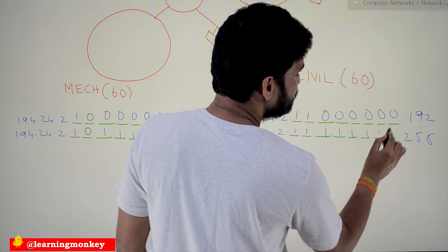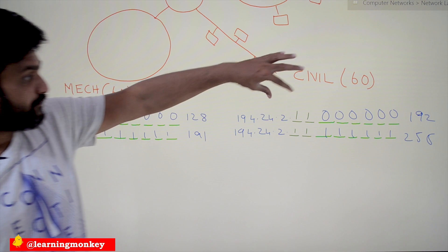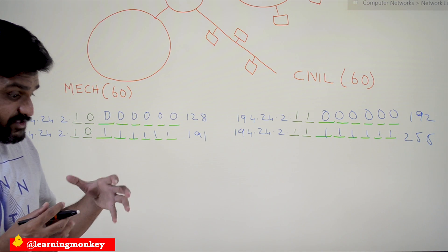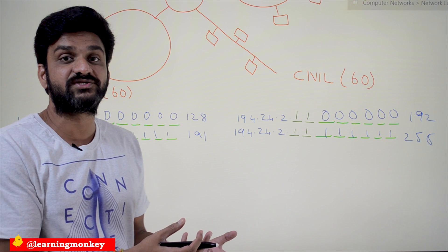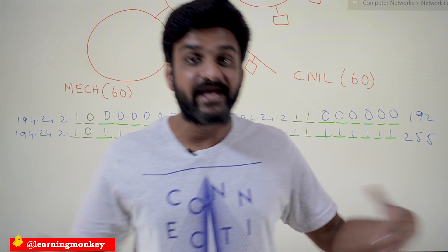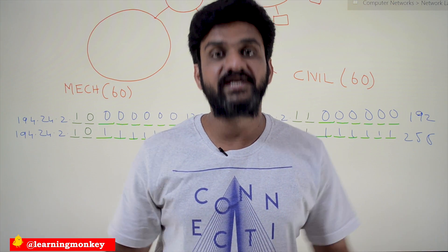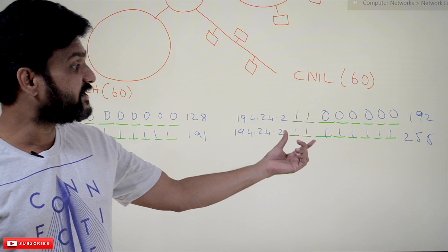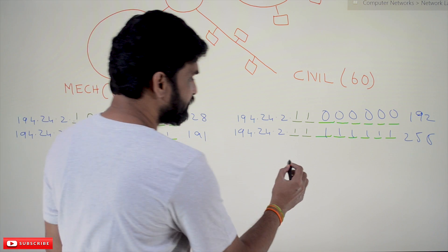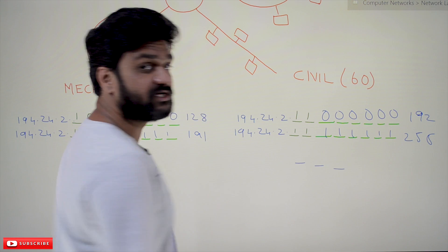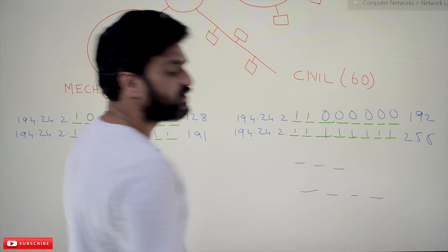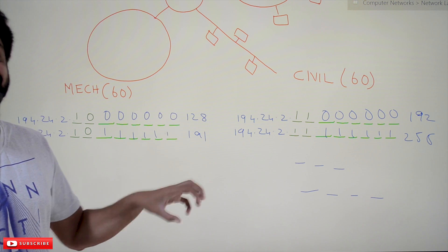Based on the number of networks required, the subnet number bit length varies. If you want to create eight networks, you need three bits for subnetting. For 16 networks, you need four bits. This is the general principle of how subnetting is done.